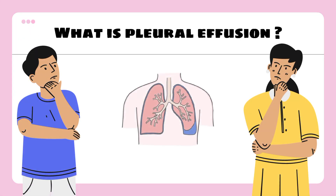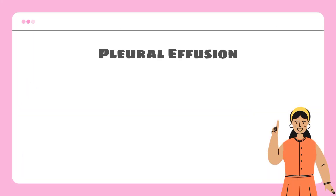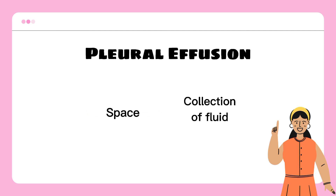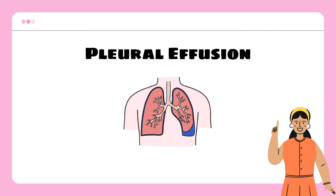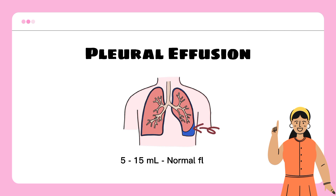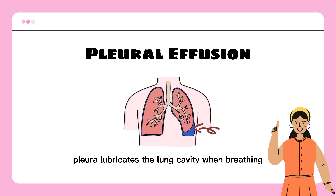What is pleural effusion? First, let's define what pleura is — it refers to the space between the chest cavity and the lungs. As for effusion, it is an abnormal high amount of fluid in a specific place where it doesn't belong. So pleural effusion is an excess accumulation of fluid in the pleural cavity. Normally, a small amount of fluid is present in the pleural space, which allows our lungs to move smoothly in our chest cavity when we breathe.